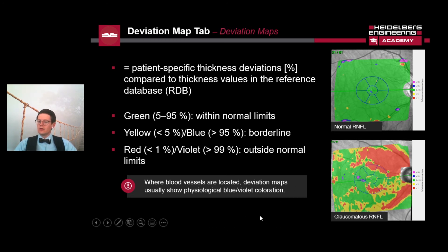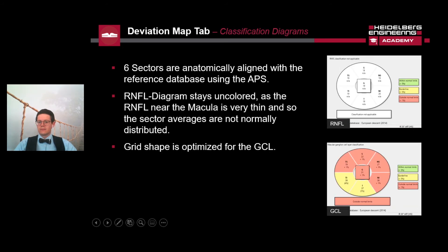Now let us see how it looks in the classification diagrams. The six-sector Garway-Heath grid is anatomically aligned with the reference database using the APS, and the results are displayed as a classification chart. The grid has been optimized for GCL thickness, so there is no RNFL color-coded classification chart. This is because the RNFL is anatomically thin in the macular region, which limits the reliability of measurements in this location, and because RNFL defects are typically most prominent beyond the confines of the GCL-optimized grid.